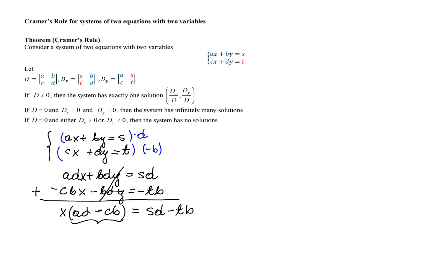Notice that AD - CB is the determinant with entries A, B, C, D, which is the determinant D. On the right-hand side, we have the determinant with entries S, B, T, D, which is D_X.